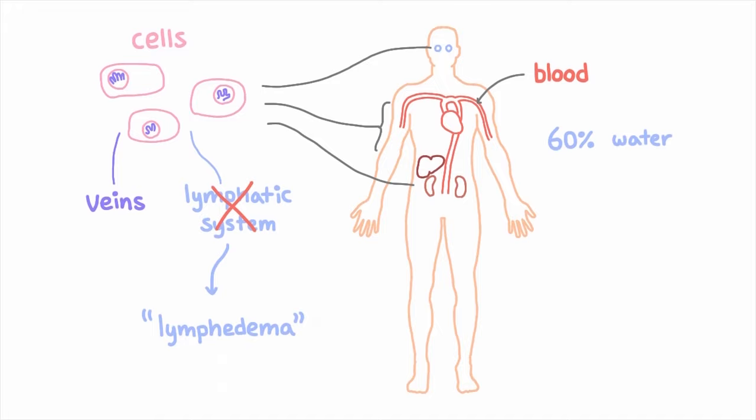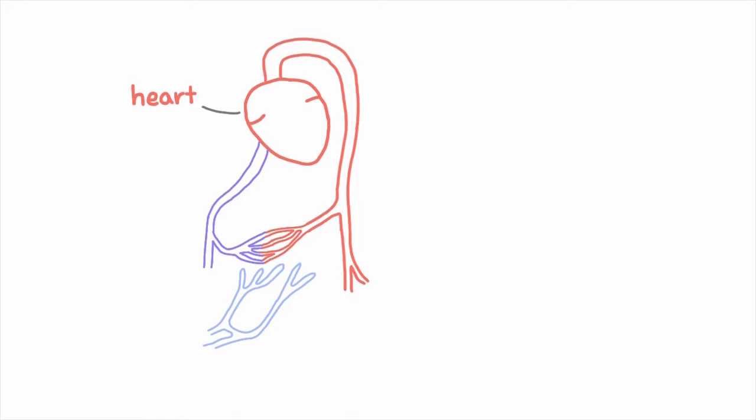Now to understand how and why this buildup happens, we need to talk about your circulatory system. Your heart, your arteries, veins and lymphatics. When your heart beats, it contracts and that creates a high pressure in the arteries,